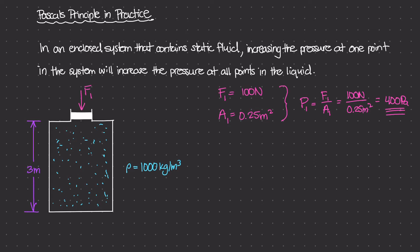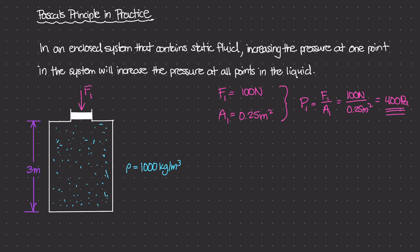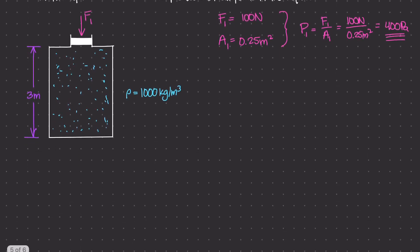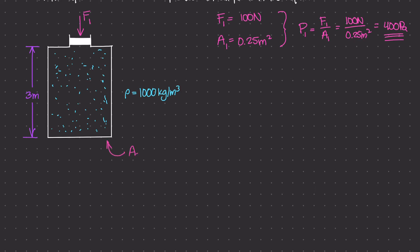If we increase the pressure inside this container from this force, what is the resulting force at the bottom? The area at the bottom is bigger than the area of the piston. Let's use some numbers to figure out the resulting force at the bottom due to this pressure increase. F1 was 100 newtons applied over Area 1 of 0.25 meters squared. At the very bottom, Area 2 — the area of the bottom of the container — is 0.75 meters squared.